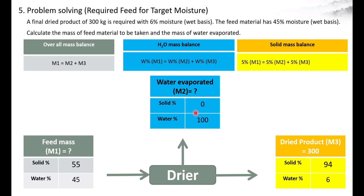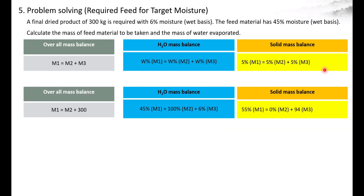Similarly, we do the solid balance by multiplying each stream by its respective solid percentage. So M1 is multiplied by its solid percentage, similarly for M2 and M3. Now we fill these equations with the data from the question. M1 and M2 are unknown, but M3 is known, so I am replacing M3 with 300 kg.